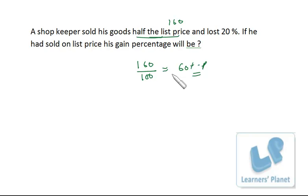I just do the problem once again, listen to me carefully. I assume the cost price to be 100 and in the first case, the loss is 20%. That means selling price is 80 rupees.